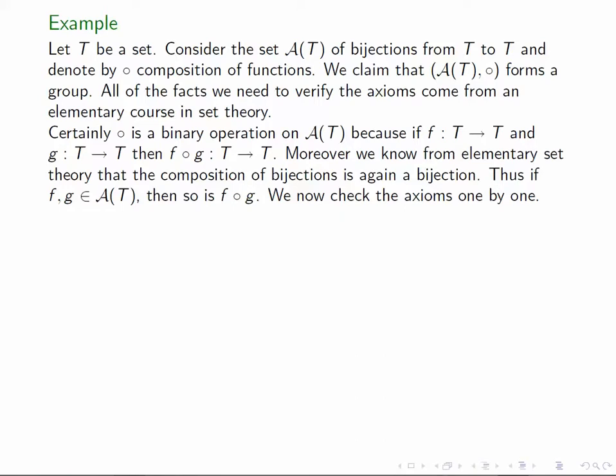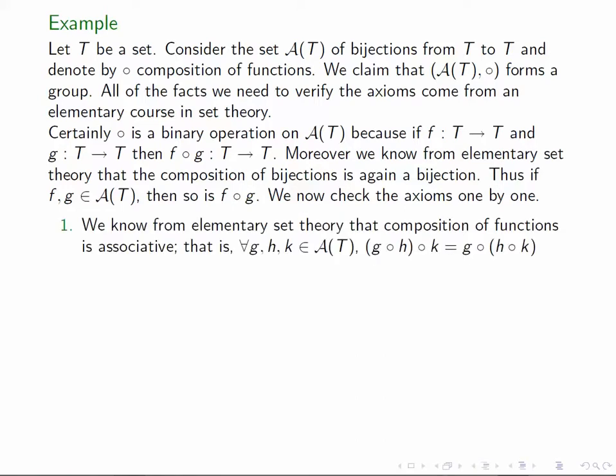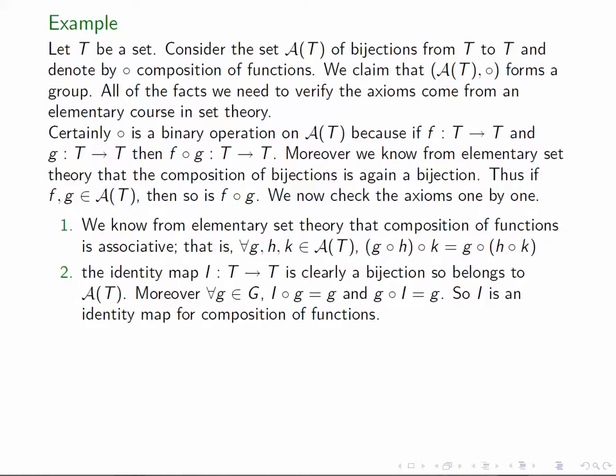Now let's check the axioms. Again, it's a basic fact from set theory that composition of functions is associative, so we'll just take that as given. The identity map as a function, the map that sends any element T to T, is obviously a bijection, and so it belongs to A(T). Obviously when we compose the identity with any map we don't change this map, so I acts as an identity for composition of functions.